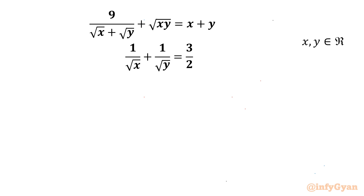Welcome to Infigyan, my dear friends. In this video we have one very interesting and challenging question from system of equations. We have to find out all real x and y. The given equations are: 9 over (√x + √y + √(xy)) = x + y, and the second equation is 1/√x + 1/√y = 3/2. We start by noting x and y must be positive for real solutions.